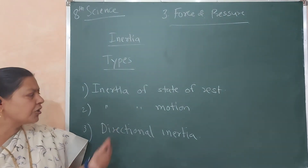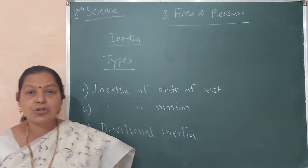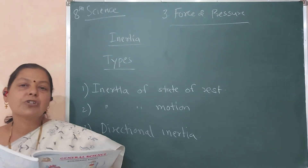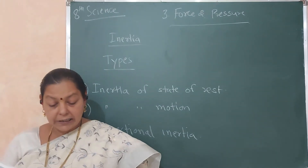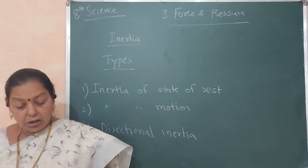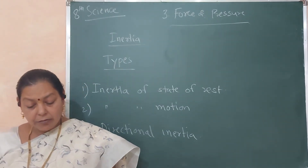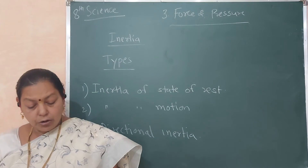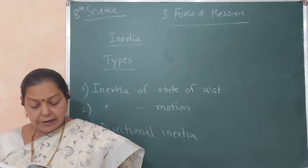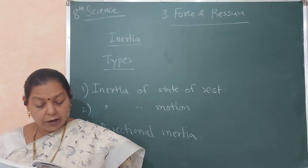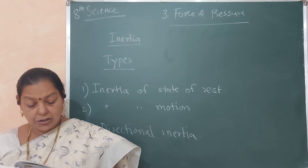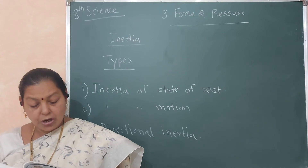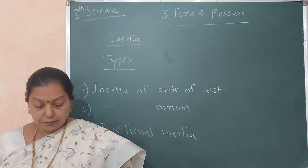The next type is inertia of motion. The inherent property of an object due to which its state of motion cannot change is called inertia of motion.